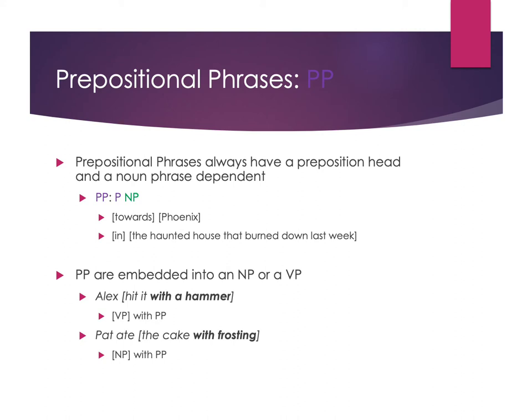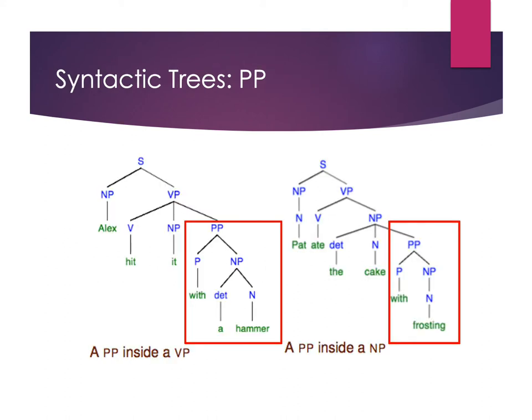Looking at trees for those two sentences: for 'Alex hit it with a hammer,' the prepositional phrase — which has its own embedding and structure — goes into the verb phrase containing 'hit.' So we have our noun phrase 'Alex,' our verb phrase with the verb 'hit,' our noun phrase with the pronoun 'it,' and then the prepositional phrase attaching directly to the verb phrase because it tells us about the verb. 'With a hammer' tells me about how the hitting took place, so it attaches directly to that verb phrase.